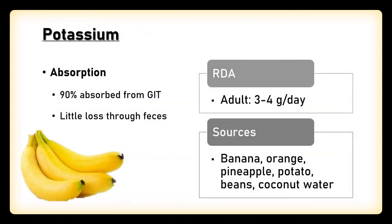Daily requirement of potassium is about 3 to 4 grams per day. The various sources of potassium are banana, orange, pineapple, potato, beans, and coconut water. Potassium is absorbed from the gastrointestinal tract, with absorption being near about 90%, and very little is excreted in the feces.